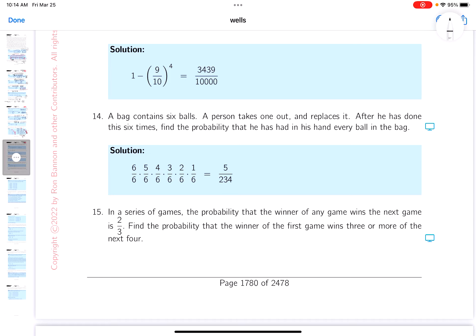Okay, so number 14. I have a bag that contains six balls. And let's say they're distinct balls at this point. A person takes one out and replaces it. After he has done this six times, find the probability that he has had in his hand every ball in the bag.